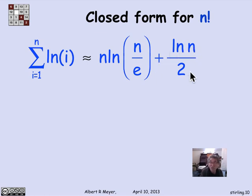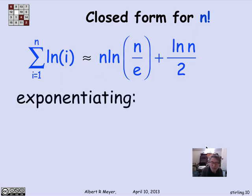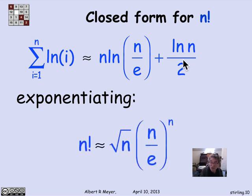Now, if I'm interested in an estimate for n factorial, let's exponentiate both sides. Taking e to this sum gives me a product of e to this times e to that. e to this is really e to the log of n over e to the nth power, which means it's n over e to the n. And this is e to the log of n to the power half, or square root of n. So we wind up with n factorial is approximately equal to the square root of n times n over e to the n.